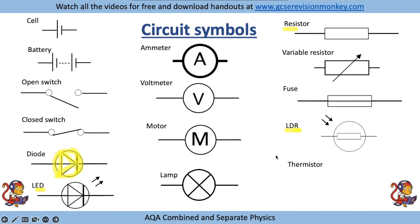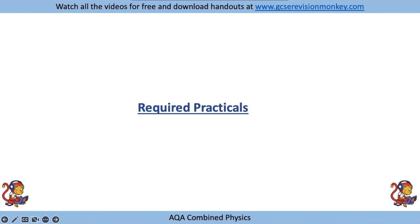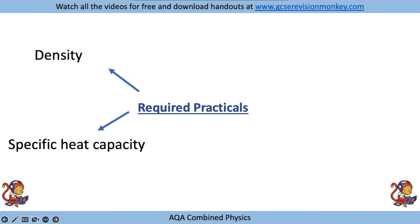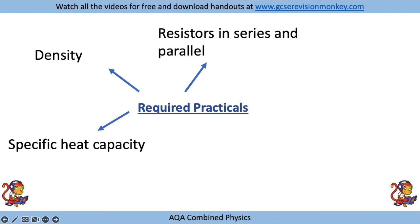Resistors are represented by rectangles: a plain rectangle is a normal resistor, a variable resistor has an arrow through it, a fuse is a resistor with a line through it, an LDR (light dependent resistor) starts with a rectangle with arrows showing light going in, and a thermistor looks like a rectangle with a T shape.